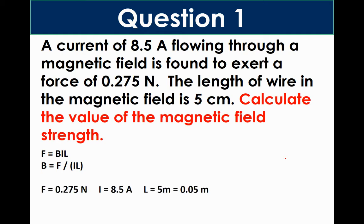We then write down all the values that we know. So the force is 0.275 newtons. The current is 8.5 amps. And again, the length is 5 centimeters, which we need to convert to meters. Plug in the numbers in our equation, we get our answer 0.65 Tesla.